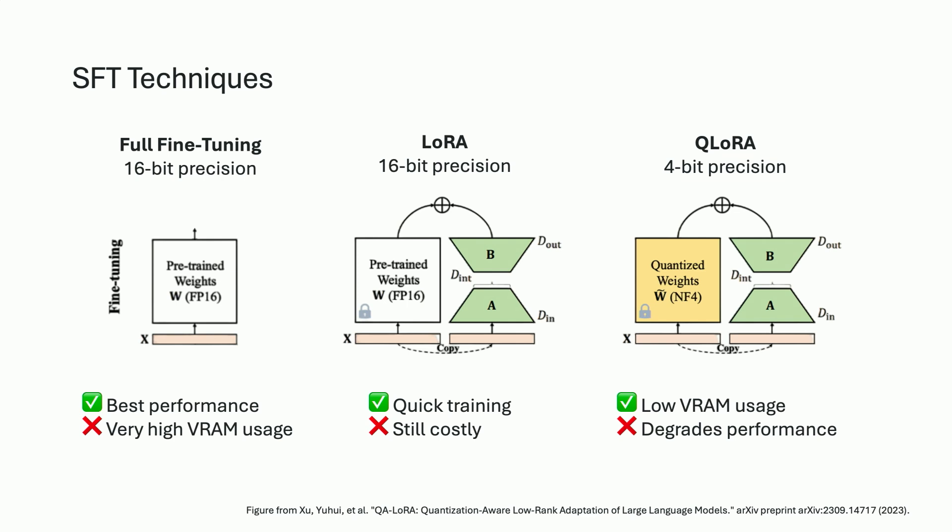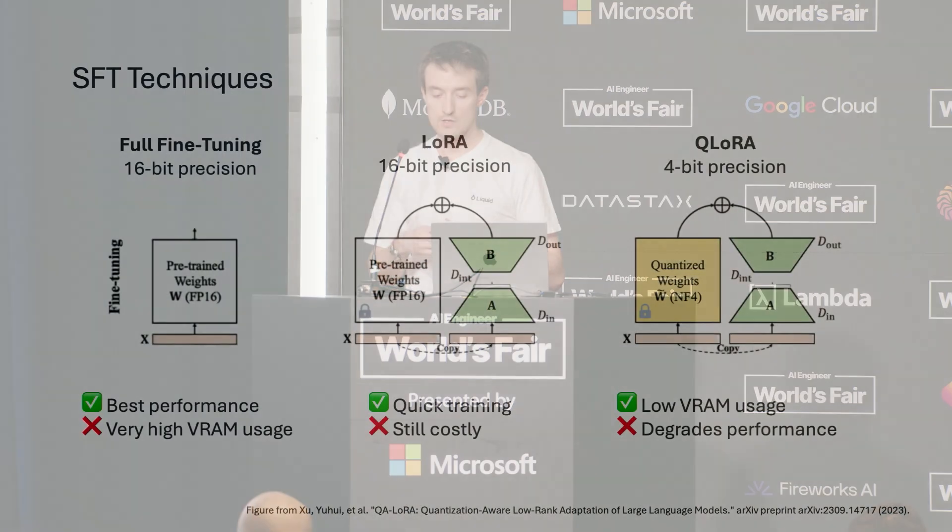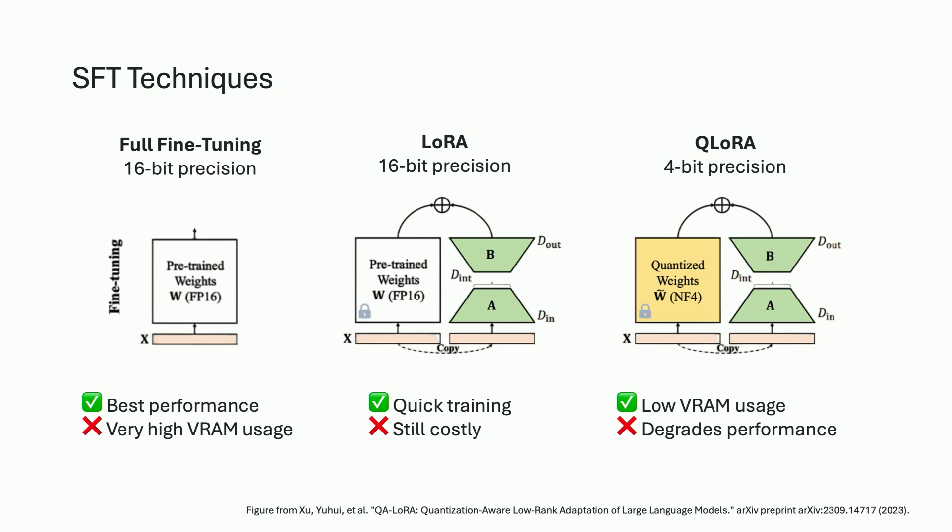In terms of SFT techniques, we have three main ones. Full fine-tuning is the most basic — you take the base model and train it on the instruction dataset. It has the best performance but is very inefficient in general. A more efficient way is LoRA, where you freeze all the pre-trained weights and add adapters to each targeted layer. Matrices A and B are these adapters — you only retrain a subset of parameters, so it's a lot faster. But it can still be costly because you're still loading the entire model in 16-bit precision. A more efficient way is to quantize the pre-trained model in 4-bit precision — this is QLoRA — applying the same idea as LoRA but with heavily quantized weights, giving lower VRAM usage, though with a performance trade-off.